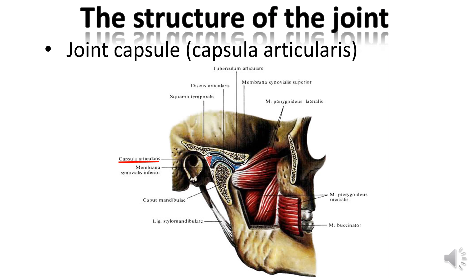The joint capsule, capsula articularis, is an elastic connective tissue membrane that consists of an external fibrous and an internal endothelium layer. The inner layer is represented by cells that secrete synovial fluid, which reduces the friction of articular surfaces and is the biological defense of the joint from the introduction of microbes. The capsule is very strong; it does not burst during dislocation. The front of the capsule is strengthened in front of the tubercle and back to the Glaserian fissure.